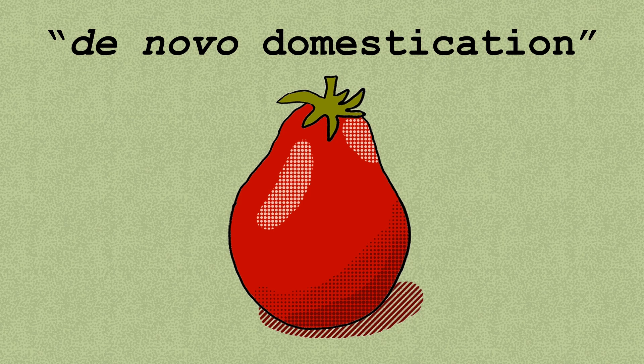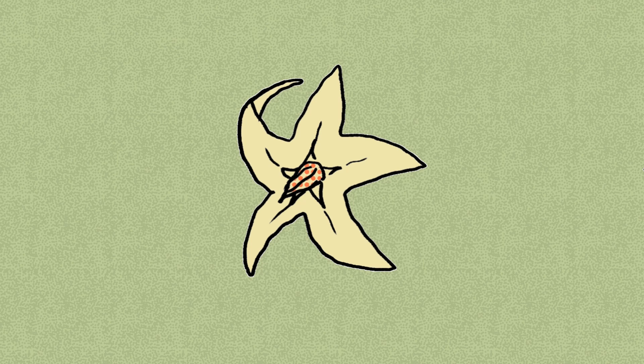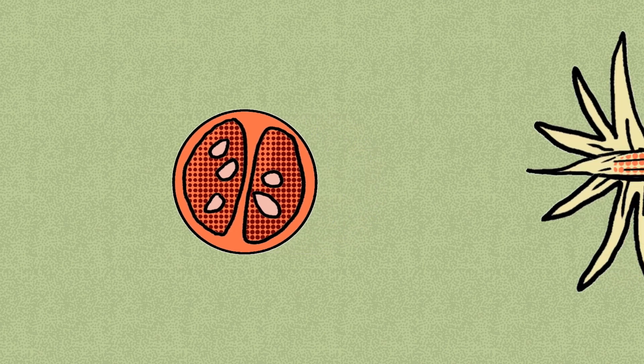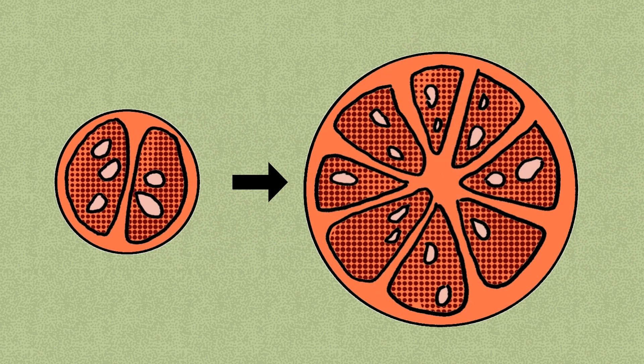First, they increased the size of the wild tomato by breaking a gene called fasciated, which acts during flower development to restrict the number of carpels. Each carpal develops into a segment of the final tomato. Breaking this gene produced a faceted flower, which grew into a large and many-segmented fruit.